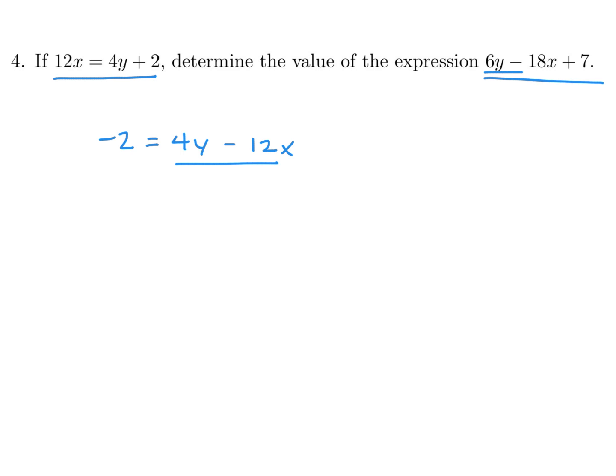This now looks somewhat similar to that, and I think if I multiply both sides by 1.5, I will get exactly that. If I multiply both sides by 1.5, this left side would become minus 3, and that would become 6Y minus 18X. So therefore in this expression, 6Y minus 18X is minus 3, and then plus 7. So minus 3 plus 7, I believe, is 4.